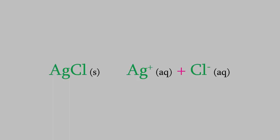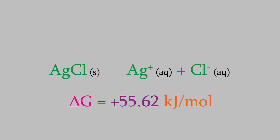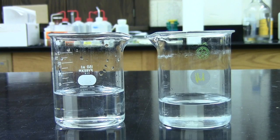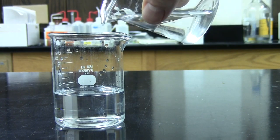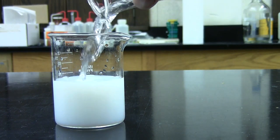Here's another reaction we've seen before: solid silver chloride dissociates to form aqueous silver and chloride ions. Delta G for this reaction is positive 55.62 kilojoules per mole. This is another irreversible reaction, but this one has a positive Gibbs free energy, so it's irreversible in the reverse direction. That makes sense — silver chloride is usually considered to be an insoluble compound, and this is why. Very little of the ions will exist in this system, because the solid silver chloride reactant is heavily favored by the Gibbs free energy.